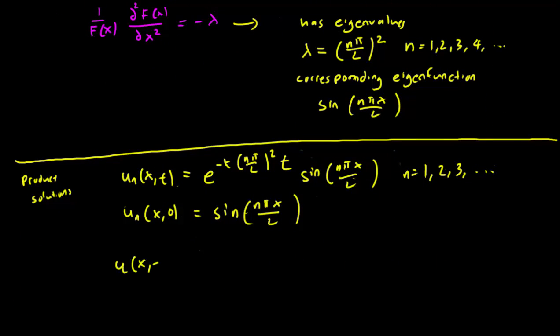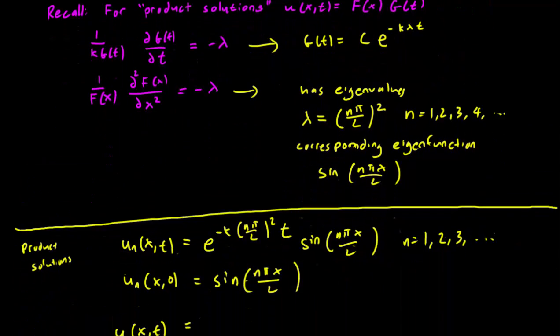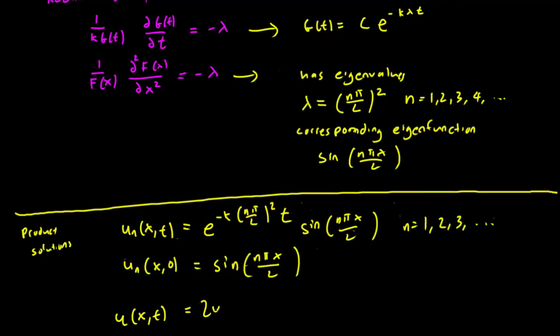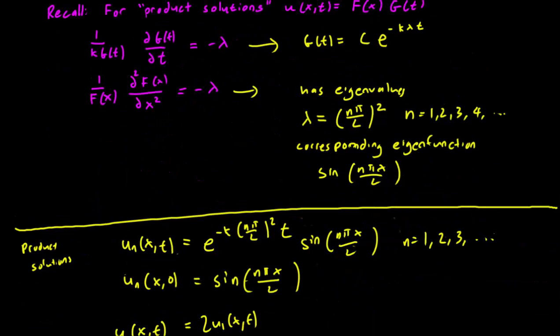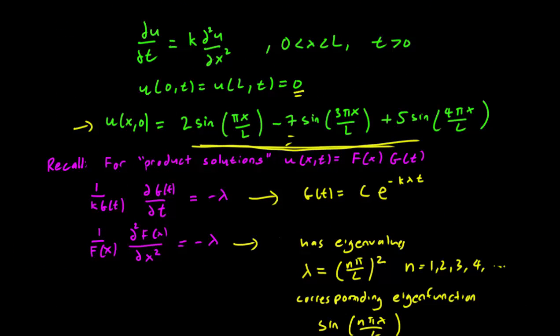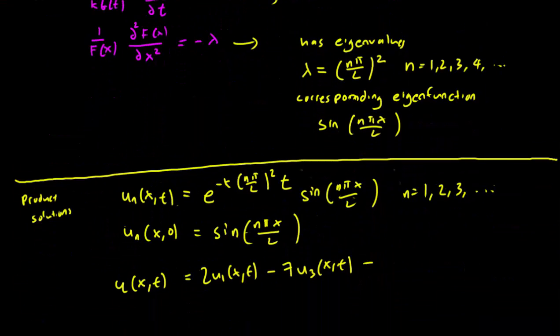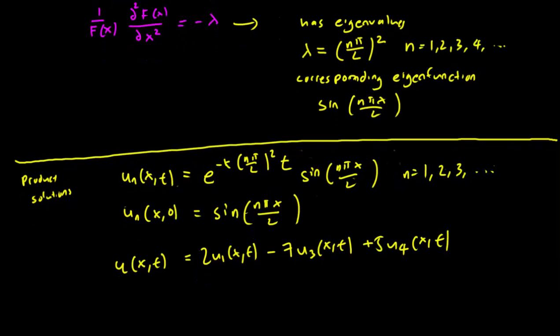u(x,t), the solution we want, is going to be: the first thing we need is 2sin(πx/L), so perhaps 2u_1 will be good, because setting u_1 with t = 0 will get the sin we need. We need -7sin(3πx/L), so let's try -7u_3(x,t), and the last term +5sin(4πx/L), plus 5u_4(x,t). That should do it.